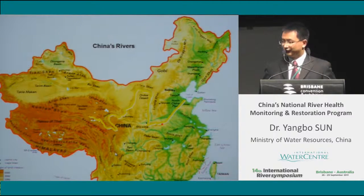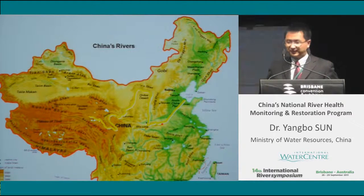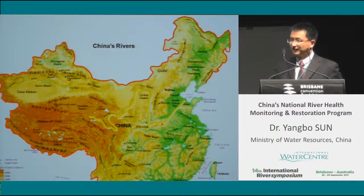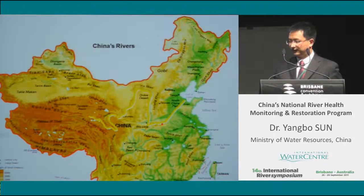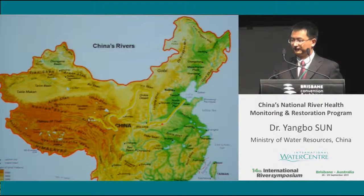This is a sketch map of China. You can see the landscape from west to east, down from the highlands of the Tibetan Plateau to the eastern China Sea, which means the landscape in China is higher in the western part and lower in the eastern part. So most of the rivers just flow from west to east. Most of the major rivers in Asia originated from this highland, the Tibetan Plateau — like the Yangtze River and the Yellow River.